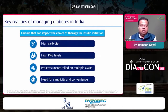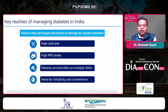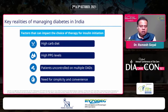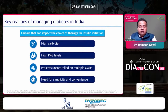Let me start with the key realities of managing diabetes in India. The factors that can impact the choice of therapy for insulin initiation in our patients include the high carbohydrate diet. I will be showing some statistics regarding carb consumption in our country, as well as data regarding high post-prandial glucose levels in our population and patients uncontrolled on multiple OADs.